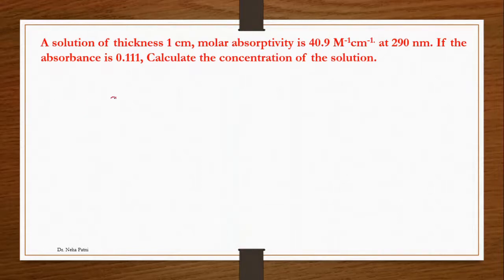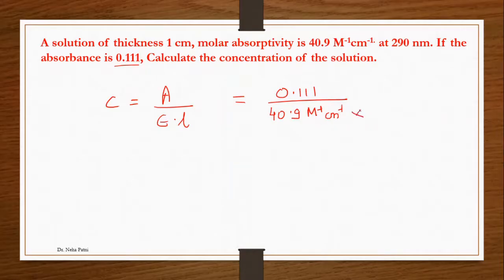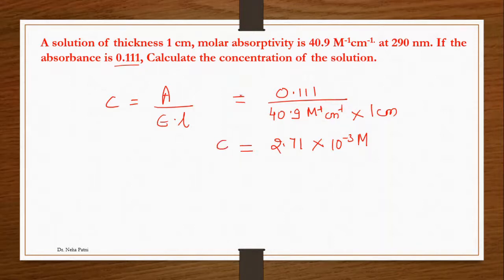One more question — very simple — again asking you to calculate the concentration. Given: absorbance A = 0.111, molar absorptivity ε = 40.9 M⁻¹ cm⁻¹, and path length L = 1 cm. Using C = A/(ε·L) = 0.111 / (40.9 × 1), you get C = 2.711 × 10⁻³ molar. This is how you calculate concentration using the Lambert-Beer law.